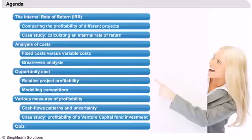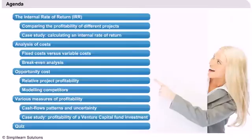Profitability of a particular project is usually a fairly objective measure. When a company already has several projects in its business, the profitability of a new project can result from synergies and diversification with existing projects. This is called relative profitability. We will also get insight into decision modeling via an example taken from game theory, which is a branch of mathematics dealing with strategic decisions.